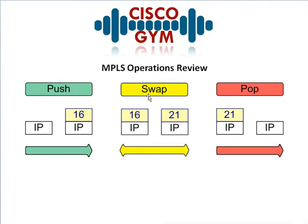Swap is when a router receives a labeled packet. It has a local label assigned for that FEC, and what it does is swap the incoming label with its own label and then routes it out the appropriate interface as specified in the LFIB.